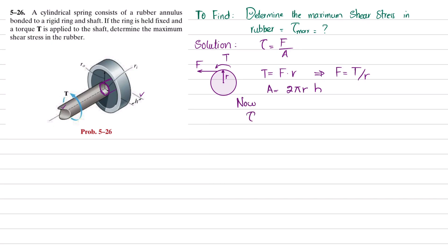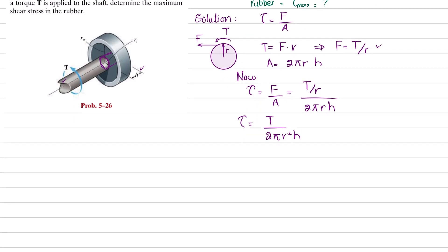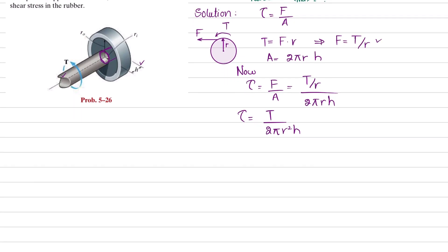We know that shear stress equals shear force per unit area. The shear force is T over r, and the area is 2πrh, so the shear stress equals T divided by 2πr²h. This simplifies to T over 2πr²h.